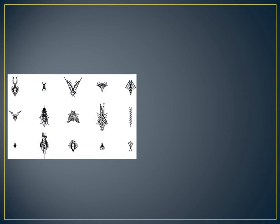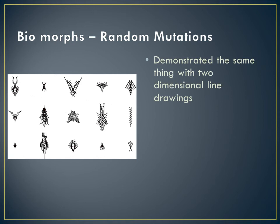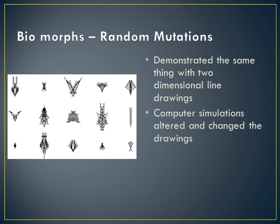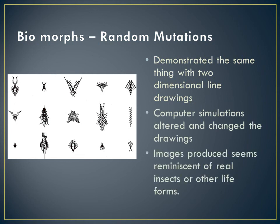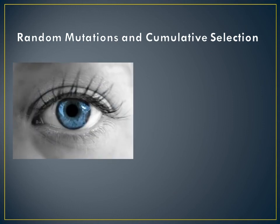Dawkins demonstrates the same thing with his biomorphs computer program, where he has some simple two-dimensional line drawings, but at random the computer mutates these drawings by extending, adding, or subtracting lines. The images gradually became more and more complex, until they were reminiscent of life forms that actually exist. Dawkins argues that if we combine random mutation and cumulative selection, whereby successive additions add to each other based on their success within the environment, then complexity is easily explained without the need for a designer.